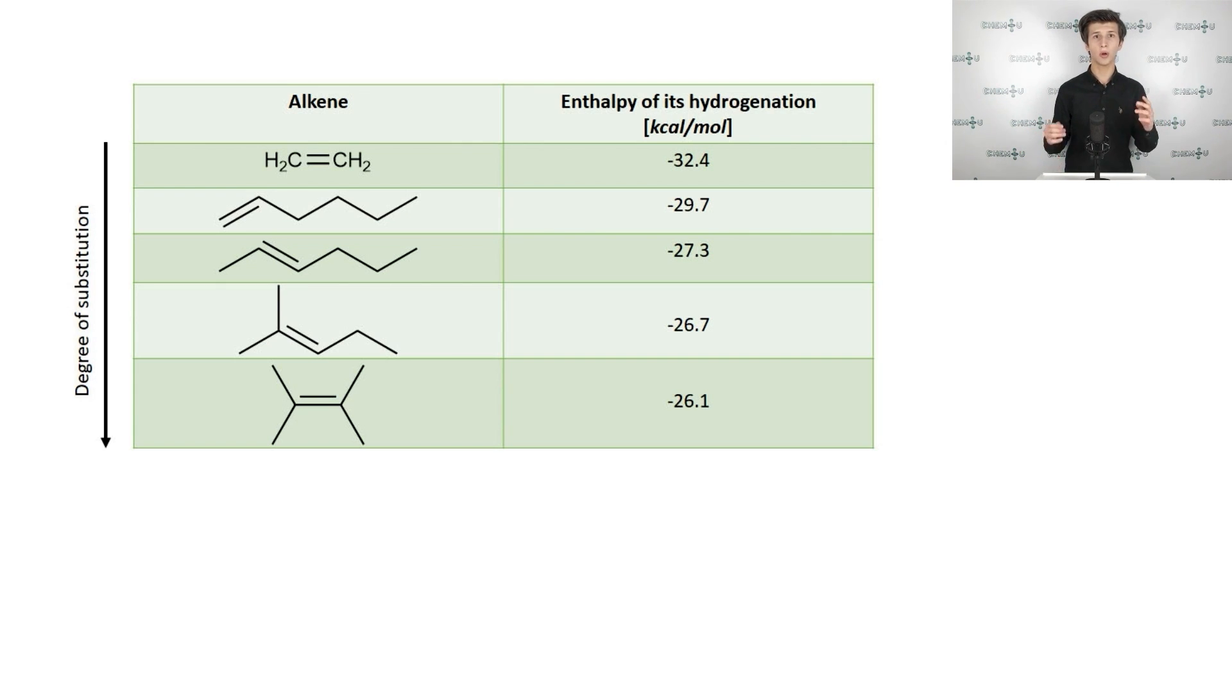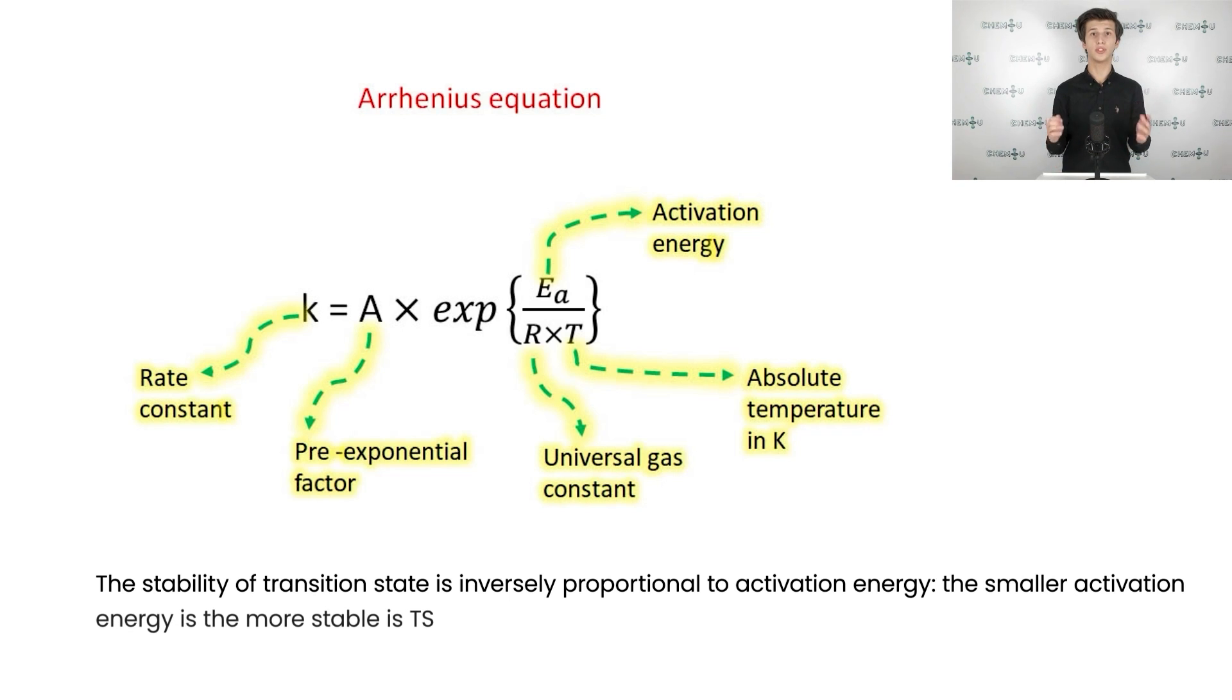The same trend is also valid for corresponding transition states. The higher is substitution, the more stable is the transition state. According to the well-known Arrhenius equation, the more stable the transition state is, the bigger is the rate constant, so the reaction persists faster.